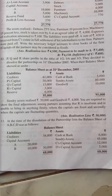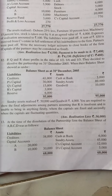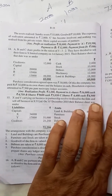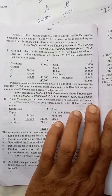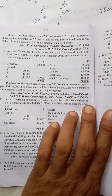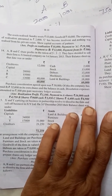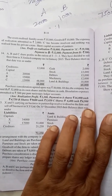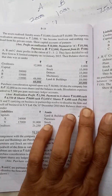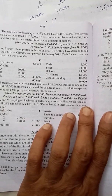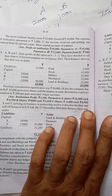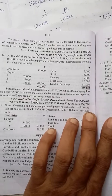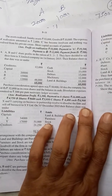Question number 13: the assets realized ₹55,000 and goodwill ₹10,000. The expenses of the realization amounting to ₹2,000. C becomes insolvent and nothing was realized from his private estate. Show the capital accounts of the partners.